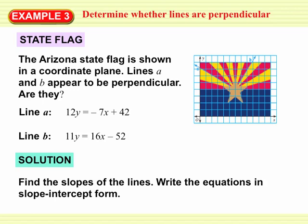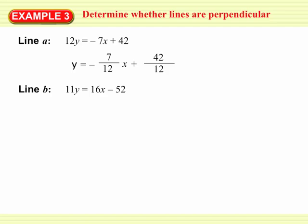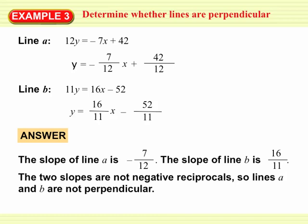We'll write both equations in slope-intercept form. For line A, we divide both sides by 12, giving a slope of negative 7 twelfths. For line B, we divide both sides by 11, giving a slope of 16 elevenths. When we compare negative 7 twelfths with 16 elevenths, those two numbers are not opposite reciprocals of each other. It's true that one is positive and one is negative, but they're not reciprocals, so the two lines are not exactly perpendicular — they're close, but not exactly.